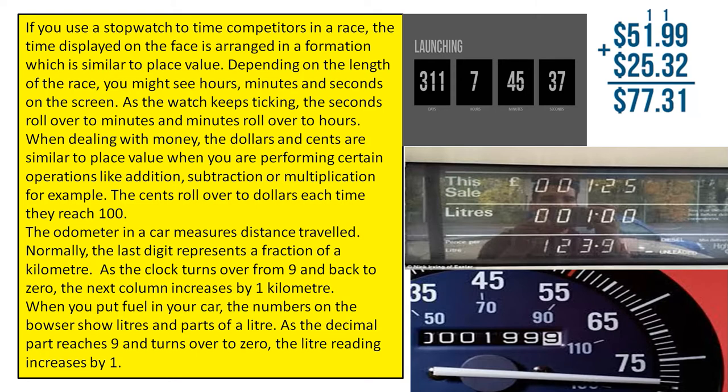The odometer in a car measures distance travelled. Normally, the last digit represents a fraction of a kilometre. As the digit turns over from nine and back to zero, the next column increases by one kilometre.